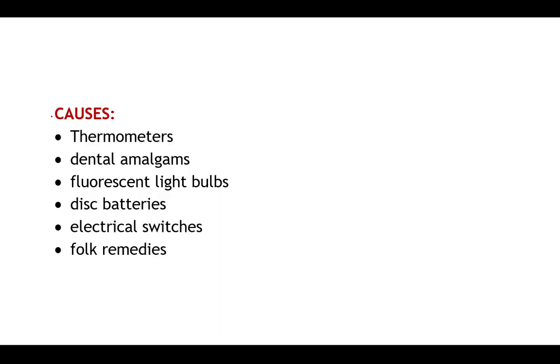Coming to the first type of poisoning — mercury poisoning. The first source is thermometers. We know that thermometers used to measure temperature contain mercury. Accidental breakage of such thermometers and contact with the mercury may take place. So this is the first source.